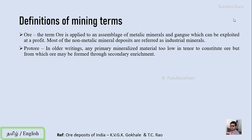The second term is protore, which is quite obviously used in older writings. It simply means any primary mineralized material that is too low in tenor to constitute an ore, but from which ore may be formed through secondary enrichment. You might have heard about placer deposits — the source rock from which weathering has taken place and geomorphic agents have separated and sorted out the mineral deposit is also known as protore.